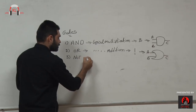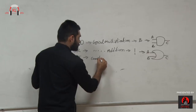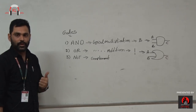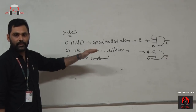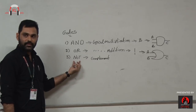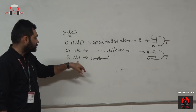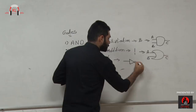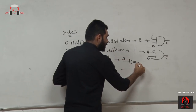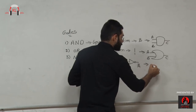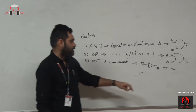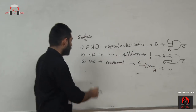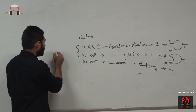The second gate is the OR gate, which performs logical addition (A + B = C). The third gate is the NOT gate, which performs the complement operation. If input is 0, output is 1; if input is 1, output is 0 — it produces the opposite value. Input is A and output is A-bar. These three gates — AND, OR, and NOT — are called the basic gates.